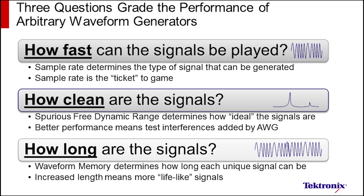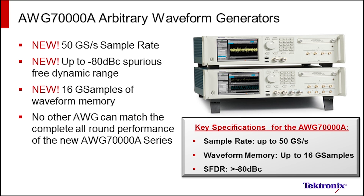Despite the complexity of AWGs, there are really three basic questions that engineers ask when evaluating them: how fast, how clean, and how long are the signals that the instrument can generate? With the new AWG 70,000 Series from Tektronix, we've introduced a solution that answers those three questions better than any other available arbitrary waveform generator without any trade-offs in performance.